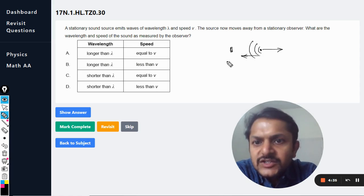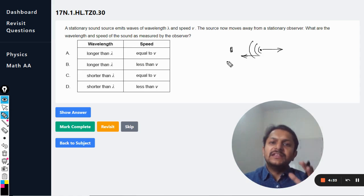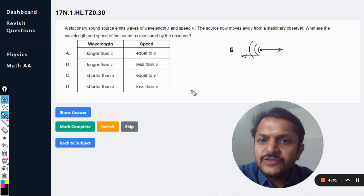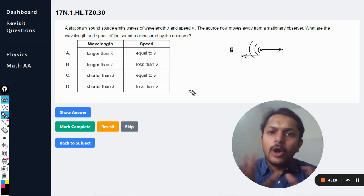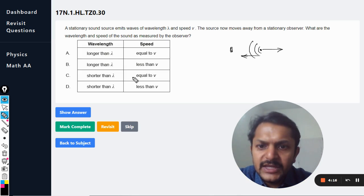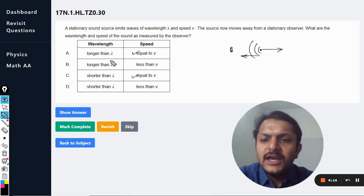...wavelength and the speed of sound as measured by the observer? My students, first of all, the speed of sound never changes. This question belongs to Doppler's effect, and in Doppler effect, only frequency and wavelength change, but the speed does not change. So it will be equal to v, no doubt about that.